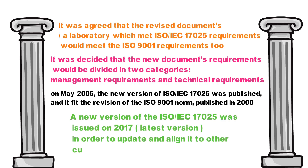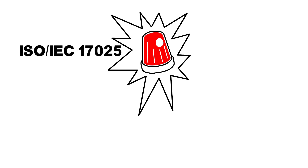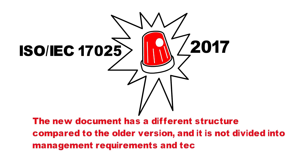Now, a new version of ISO 17025 was issued in 2017, which is the latest version, in order to update and align to the current norm of ISO 9001. The new document has a different structure compared to the older version and it is not divided into management requirements and technical requirements as it used to be. The 2017 version is divided as follows.